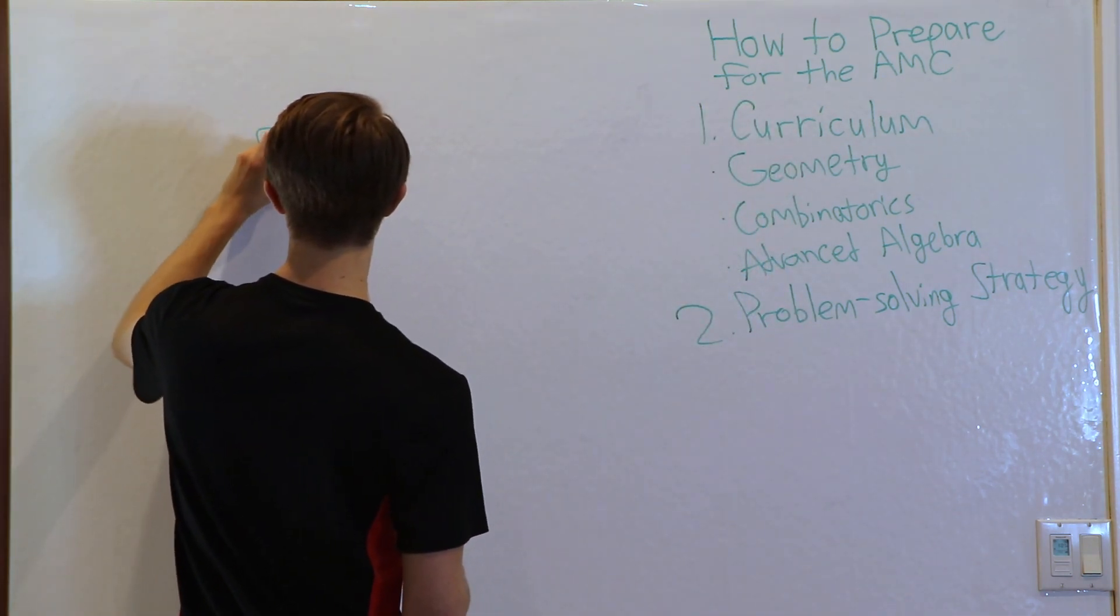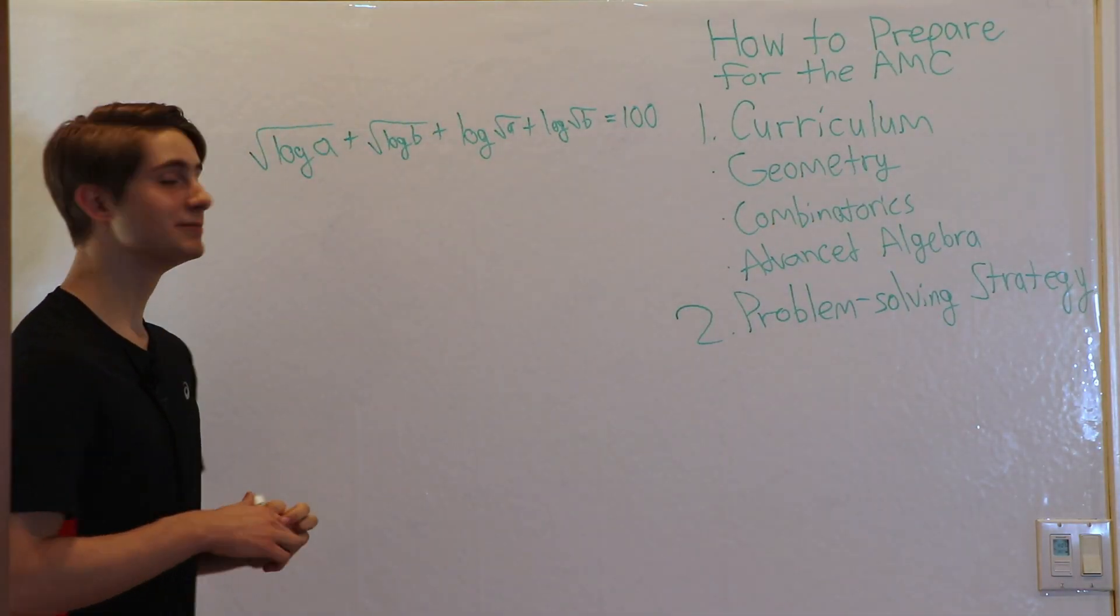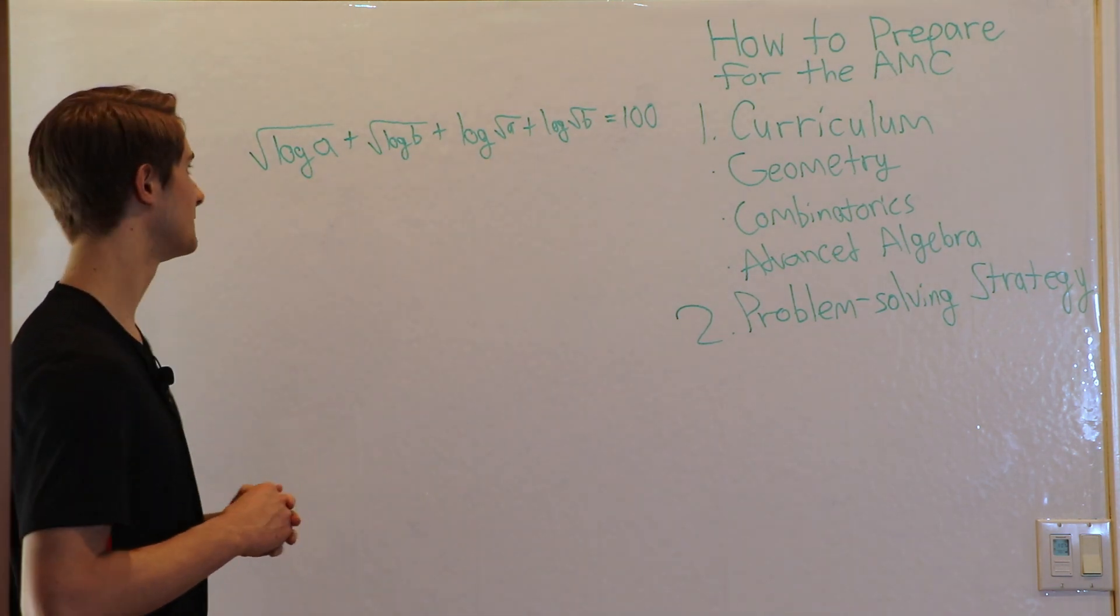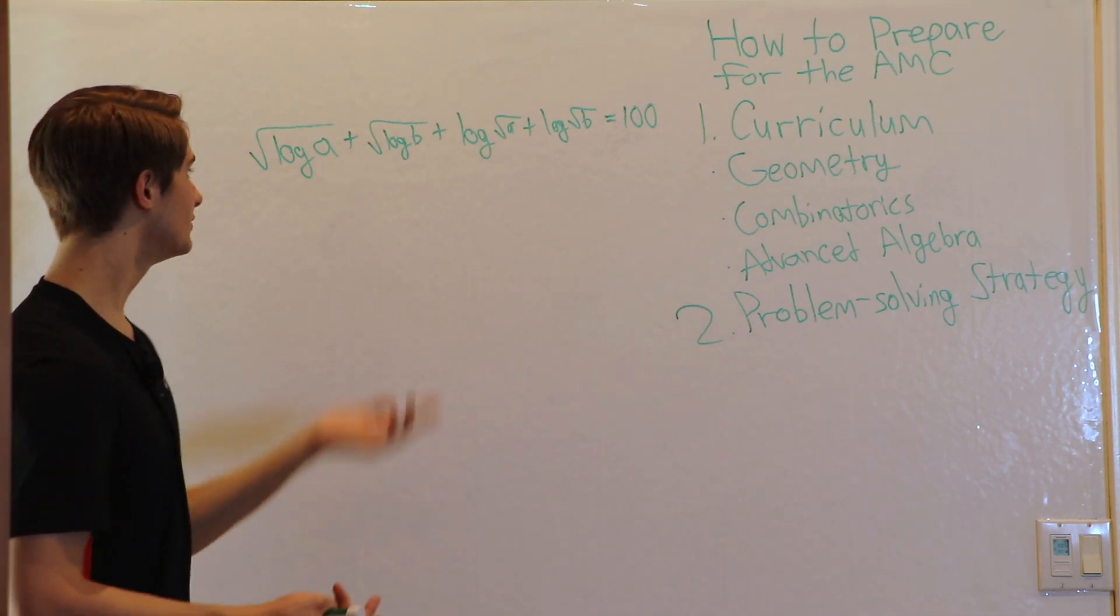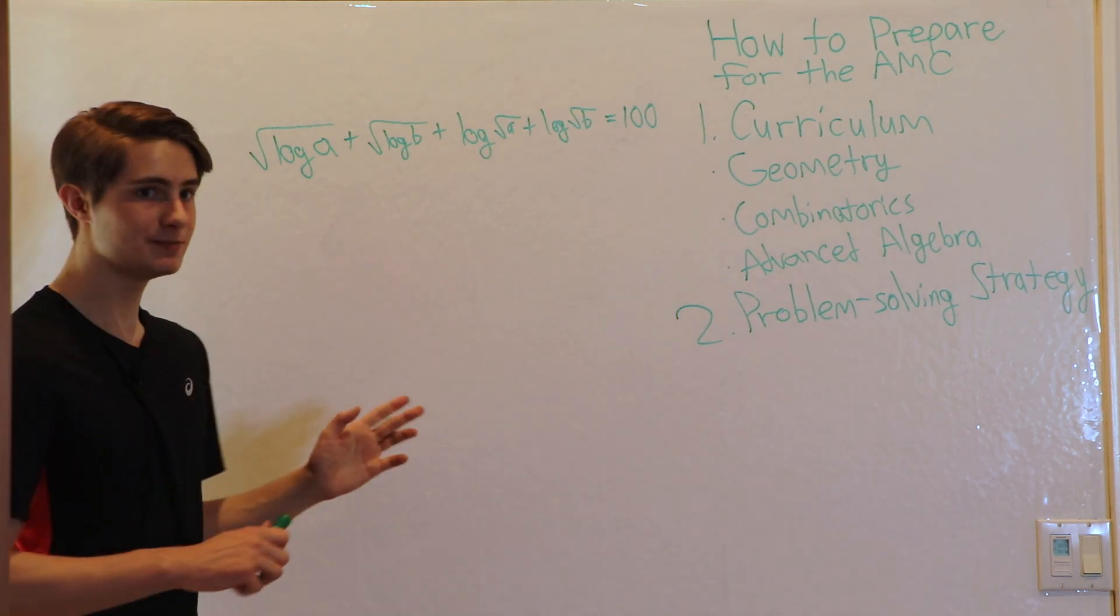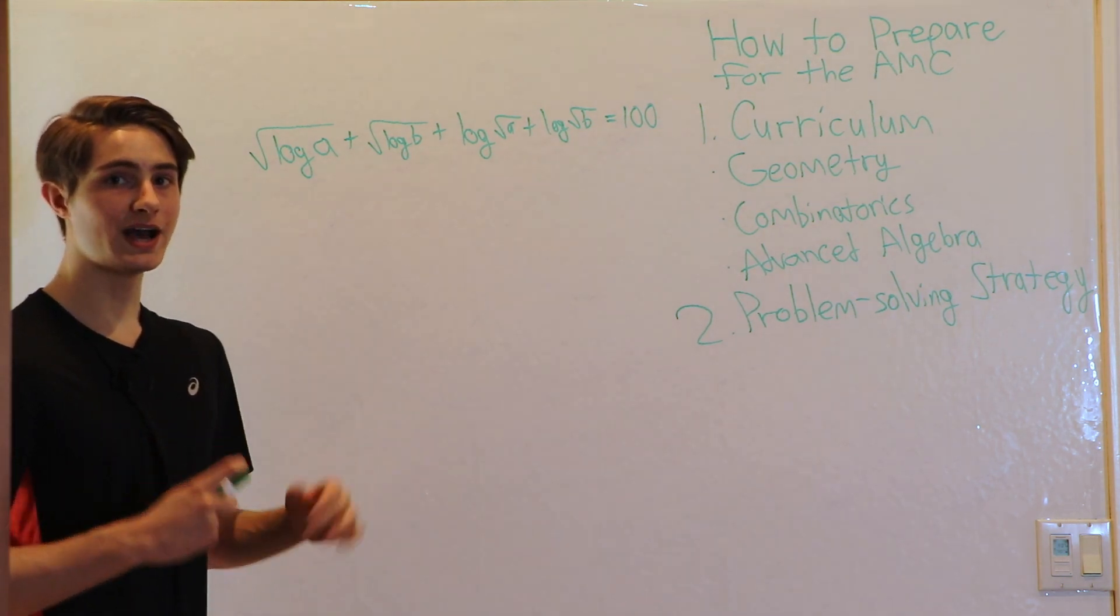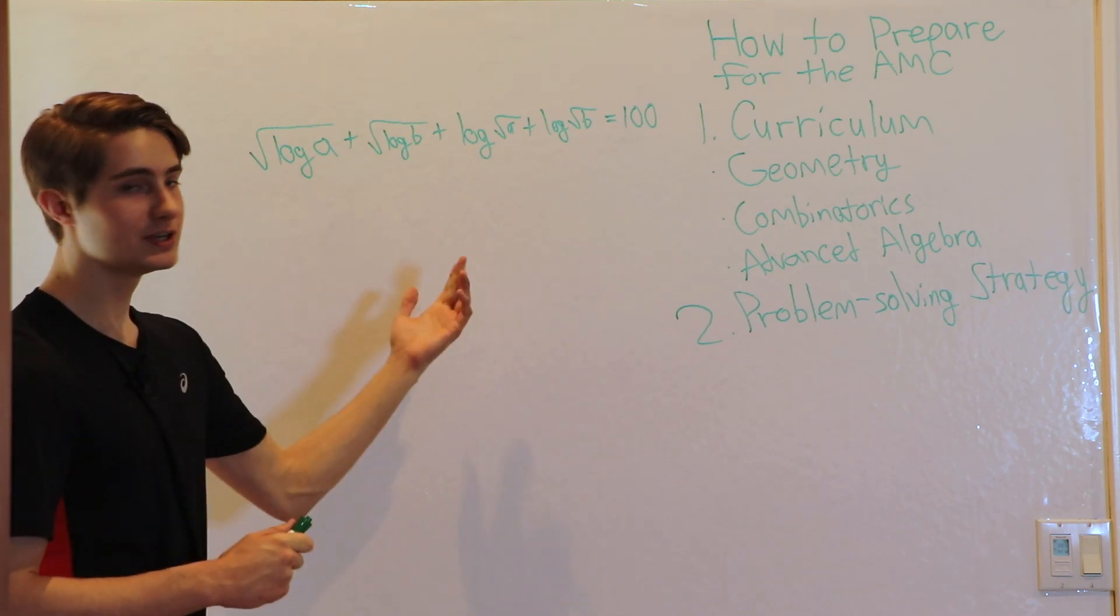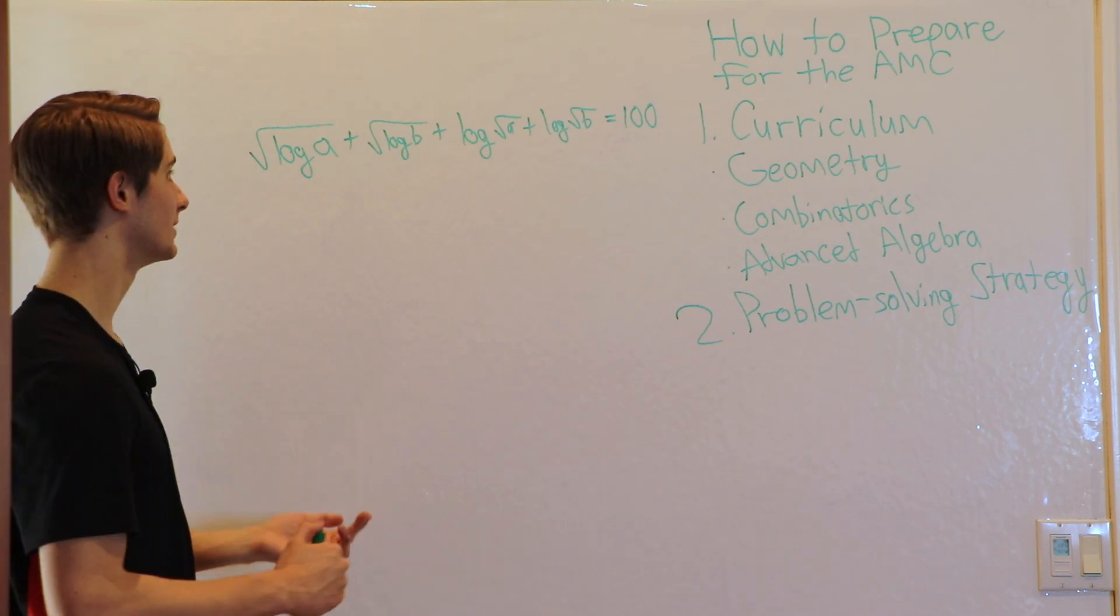Let's say I have an equation like this. So say I have this equation and the AMC says solve for a times b if every term on the left is an integer. Now you probably looked at this equation and thought I have no idea even where to start to solve this problem. And that's completely normal. Most AMC problems will not have an easy to see solution. What that means is that you're going to have to help your brain out in figuring out how to solve the problem. That means moving things around in the equation and manipulating a little bit until it becomes easier to recognize.